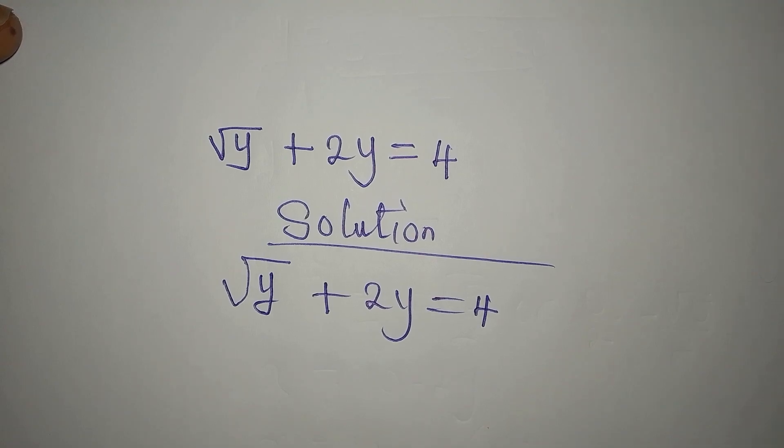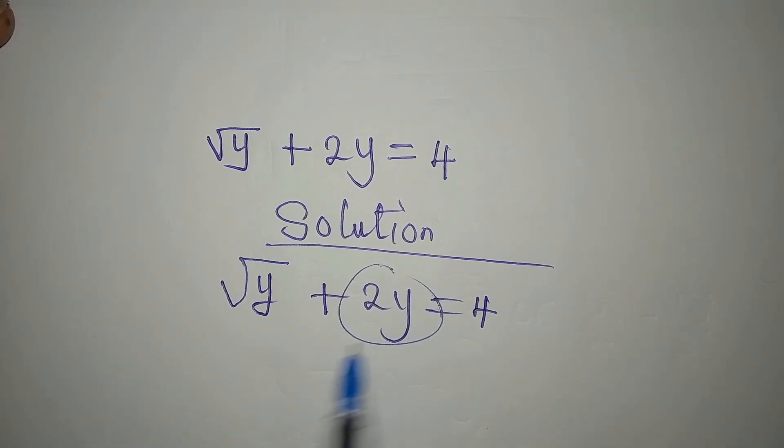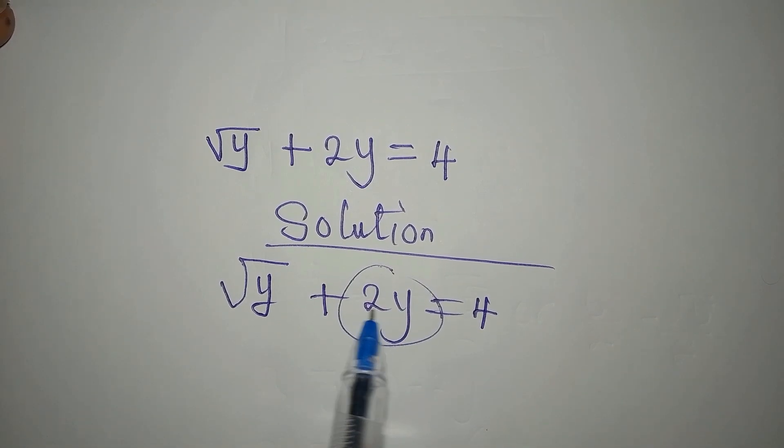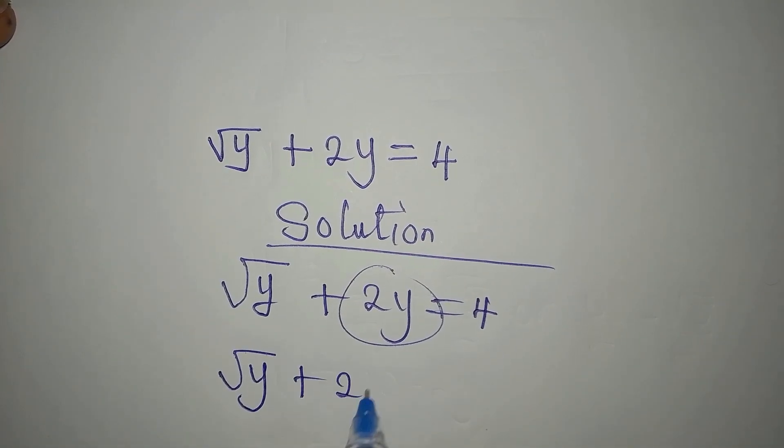The question is how do we get the value of y? Let's remove this from here. So to remove that, I'm going to subtract this from both sides, so we have root y plus 2y, then we have minus 2y.